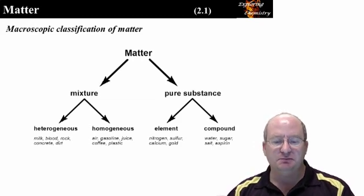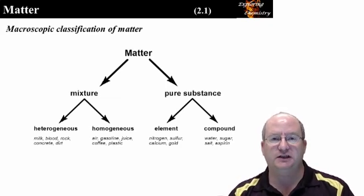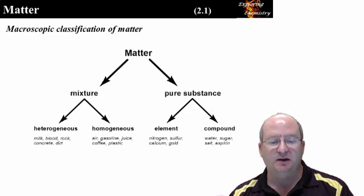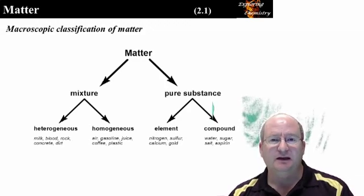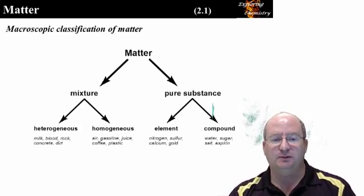Looking at mixtures, mixtures contain more than one chemical entity. Mixtures are divided into heterogeneous and homogeneous categories. Heterogeneous mixtures may be separated through physical means. For example, if you leave milk on the counter, the proteins will coagulate and separate from the aqueous component. Blood does the same thing. If you look closely at rocks, concrete and dirt, the different components are visible to the eye.